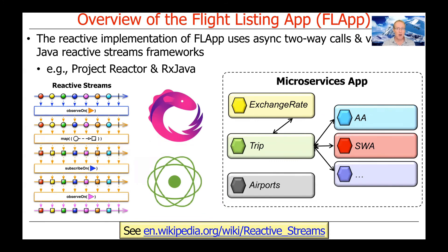Where we're really going — and where we'll spend the bulk of time, especially the last two-thirds of the course — is an implementation of FLAP using async two-way calls and Java reactive streams frameworks, including Project Reactor and RxJava. Using WebFlux and Project Reactor in conjunction with an Android client that uses RxJava, we get a completely asynchronous communication and computation model that is scalable, declarative, and convenient once you understand reactive streams-based code. It's like functional programming but with a PubSub-like flavor.